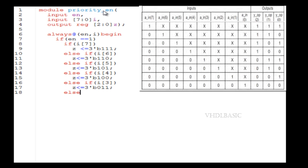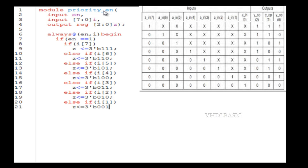Coming to the Verilog code of the priority encoder, the input is enable and input I from seven down to zero, and the output is from two down to zero. In the sensitivity list, we add enable as well as the input I. If enable is one, the priority encoder is enabled. If enable is zero, the output will be assigned to zero. If the enable is high impedance, the output will also be assigned as high impedance.